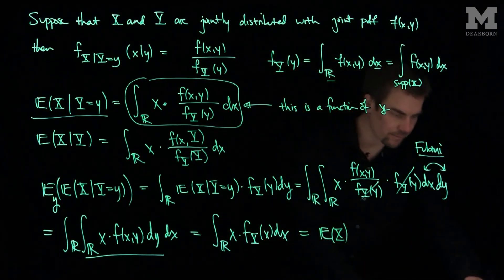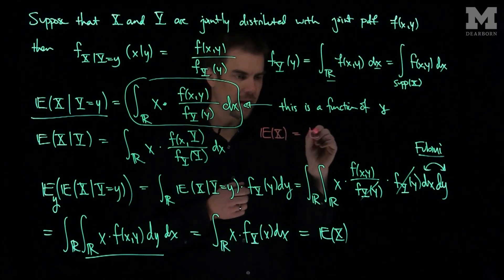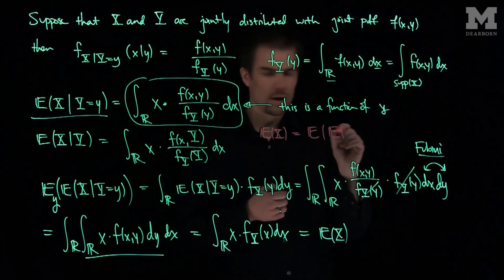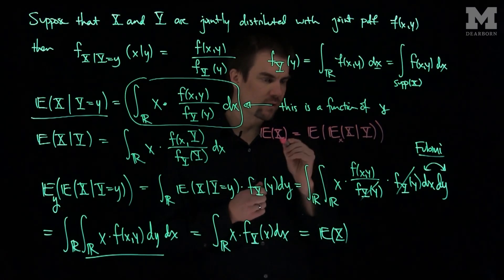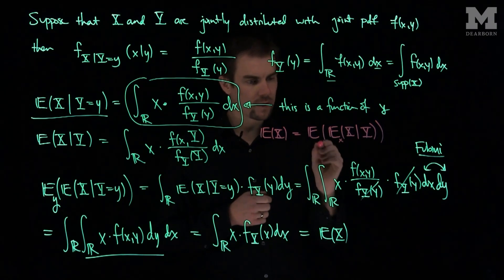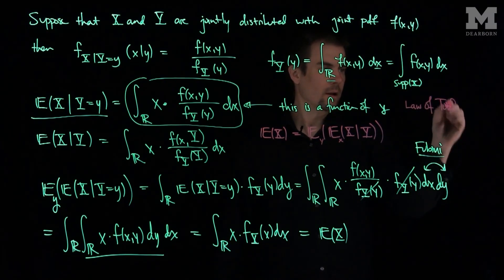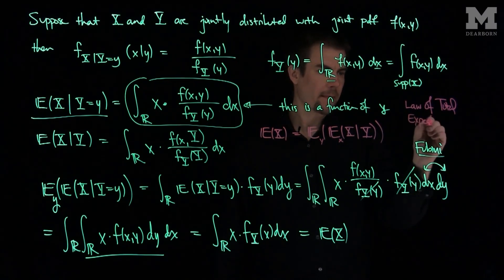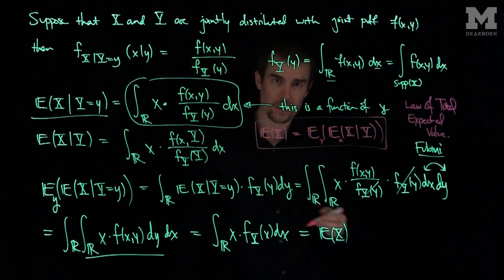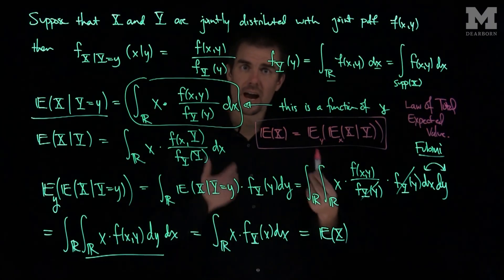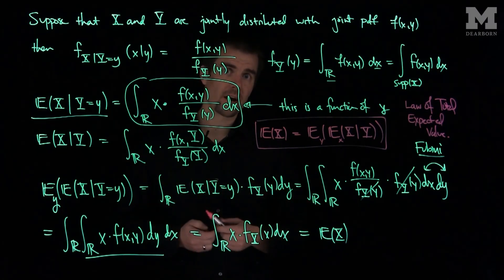So we've proven the law of total expected value, which says that the expected value of x equals the expected value of the conditional expected value of x given y. Sometimes in textbooks you'll see a subscript x to denote that you're taking an expectation over x here, and a subscript y for the outer expectation. This is a very useful law — if you wish to find the expected value of x, you can condition x on some other known events and use that conditional expected value to find E[X]. Thank you very much.